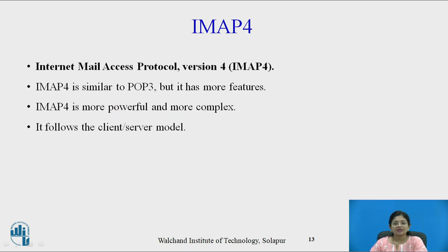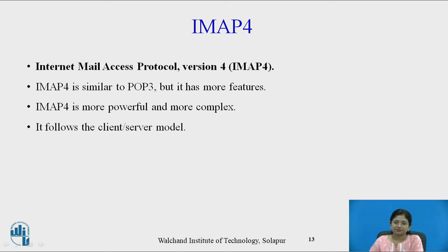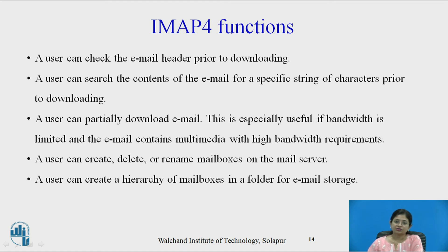The next important pull protocol is Internet Mail Access Protocol version 4, known as IMAP4. IMAP is similar to POP3 but has more features. IMAP4 is more powerful and more complex, and it follows the client-server model. A user can check the email header prior to downloading, search the contents of the email for a specific string of characters prior to downloading, and partially download the email — which is especially useful if bandwidth is limited and the email contains multimedia with high bandwidth requirements.